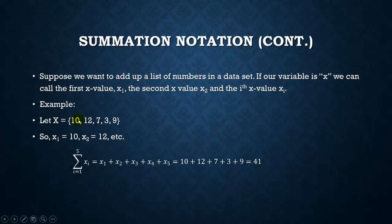So, if I want to add up all the numbers in my sample, I would write summation i equals 1 to 5 of x subscript i. So, that means my first value would be x subscript 1, and then I would add to it x subscript 2, then x subscript 3, all the way up to x subscript 5. Plugging in those numbers, I get 10 plus 12 plus 7 plus 3 plus 9 for a total of 41.